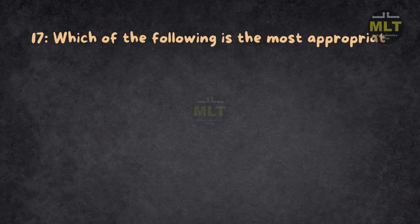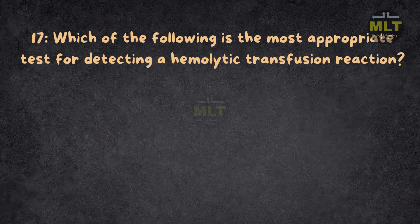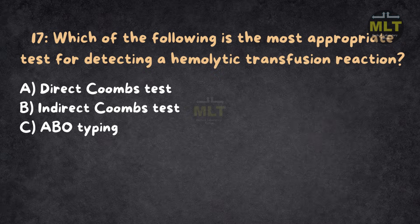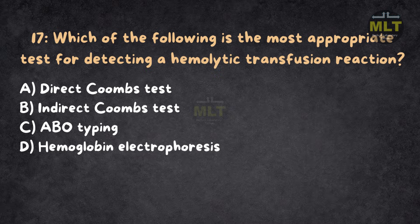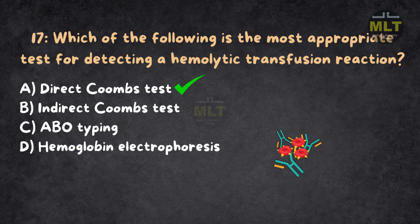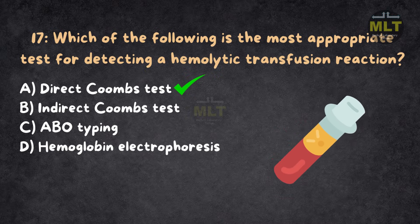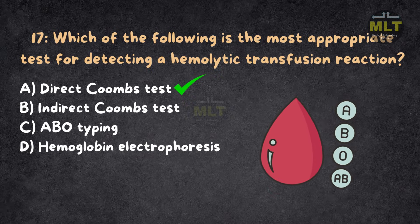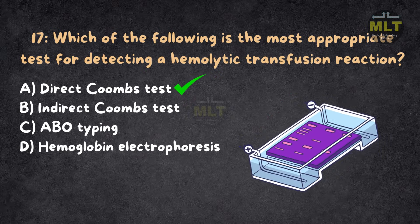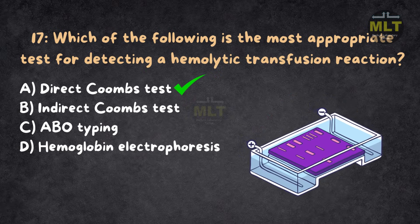Question 17: Which of the following is the most appropriate test for detecting a hemolytic transfusion reaction? Option A: Direct Coombs test. Option B: Indirect Coombs test. Option C: ABO typing. Option D: Hemoglobin electrophoresis. Correct answer: A, Direct Coombs test. The Direct Coombs test detects antibodies already attached to red blood cells, indicating a hemolytic transfusion reaction. Indirect Coombs test detects antibodies in the serum, not on red blood cells. ABO typing identifies blood group compatibility, not hemolytic reactions. Hemoglobin electrophoresis is used to diagnose hemoglobinopathies, not transfusion reactions.